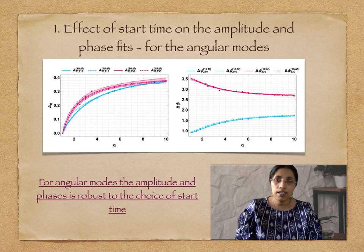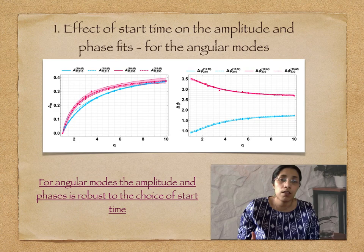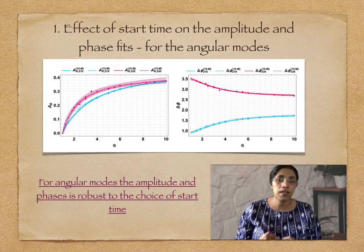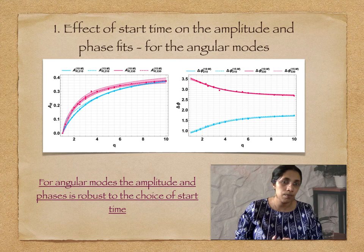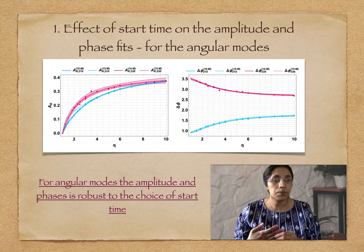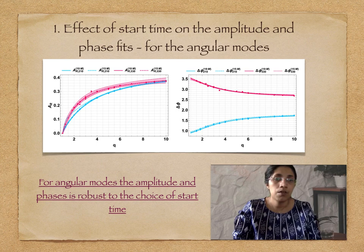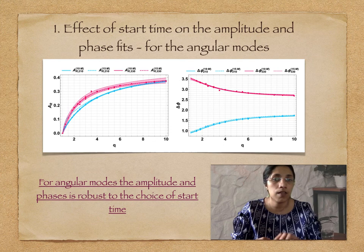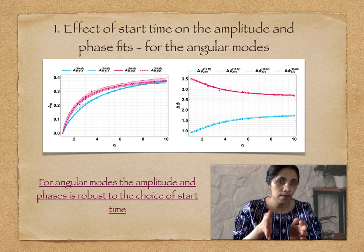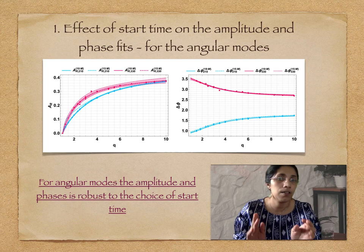These signal-to-noise ratios in the ringdown are routinely achievable with LISA, and hence it's essential to model the ringdown waveform accurately. The way we model the amplitude and phases of different quasi-normal mode excitations is by fitting damped sinusoids to numerical relativity data. One important question is when you start fitting these numerical relativity simulations. We first investigate this for the angular modes. In the figure shown, we plot in blue the fitting of amplitude and phase for the 2-1-0 mode and in red for the 3-3-0 mode.